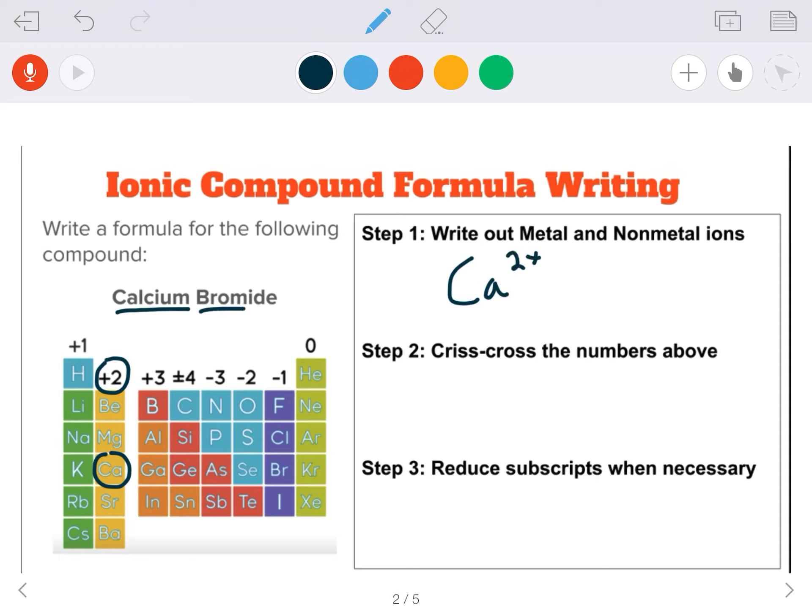Then we'll move on to our non-metal bromide. And I'll circle that. That's in group 17. Its charge is one minus. And those are the two ions involved.